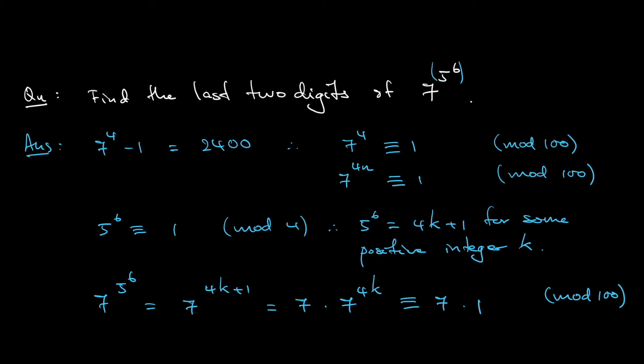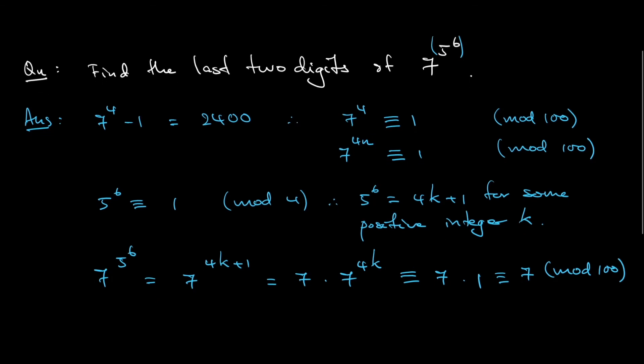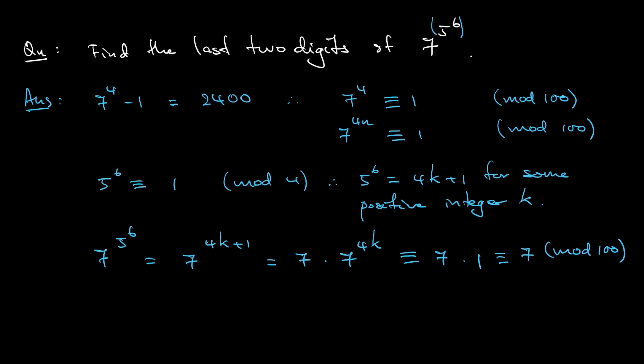So 7 times 1 is still a 7. So that means that the number 7 to the power of 5 to the power of 6, when divided by 100, the remainder is 7.